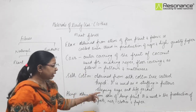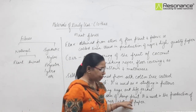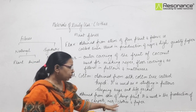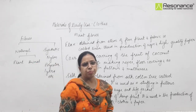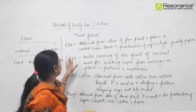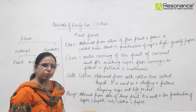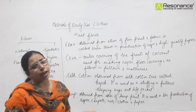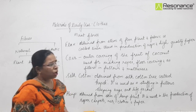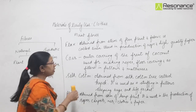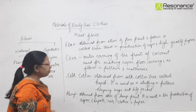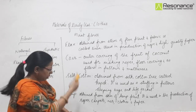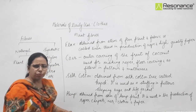The next fiber is hemp. Hemp is obtained from the stem of the hemp plant - again a bast fiber. It is used in the production of ropes, carpets, nets, clothes, and paper. Hemp clothes are used and linen is also used in making fabrics. These were fibers other than cotton and jute which are used for various purposes.